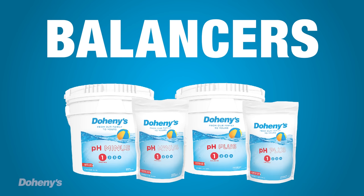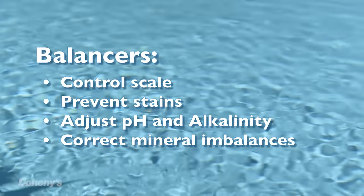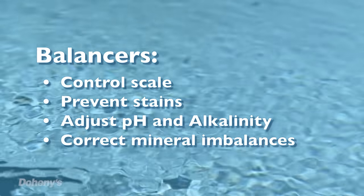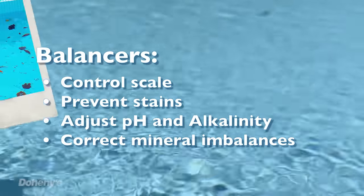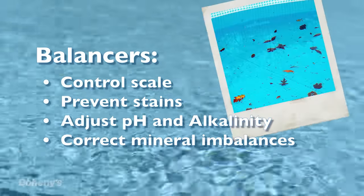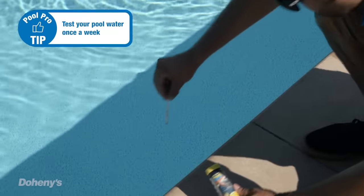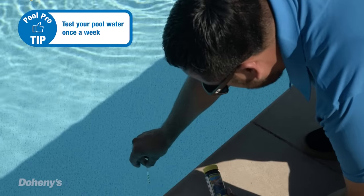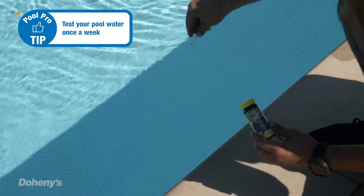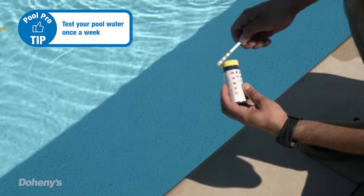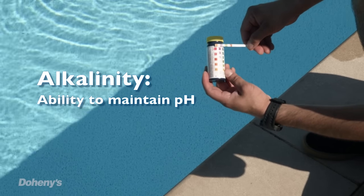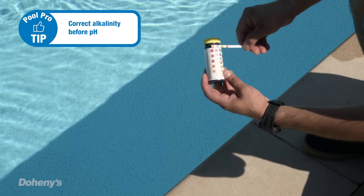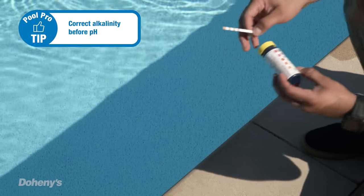The first category of chemicals we're going to talk about are balancers. Balancers have a very important job in your pool — as their name implies, they keep your pool chemistry in balance. Water that is out of balance can lead to a number of issues including skin irritation, pool stains, and damage to your equipment. To find out if your water is in balance, test it by using a test kit or test strips. First you want to make sure your alkalinity is in balance. Alkalinity is the measurement of your water's ability to maintain pH, so it is important to correct alkalinity imbalances before you attempt to correct pH.